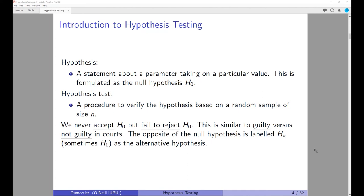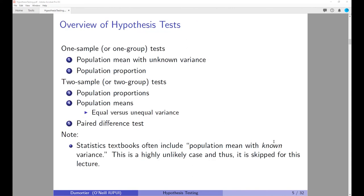This is very similar to the guilty versus not guilty verdict in courts — we do not have an innocent verdict. The opposite of the null hypothesis is labeled H_A, sometimes also H_1. In this lecture we are going to look at various hypothesis tests. The first video focuses on one-sample or one-group tests, looking at the population mean with unknown variance and population proportions. Concepts learned from the confidence interval lecture will be helpful.